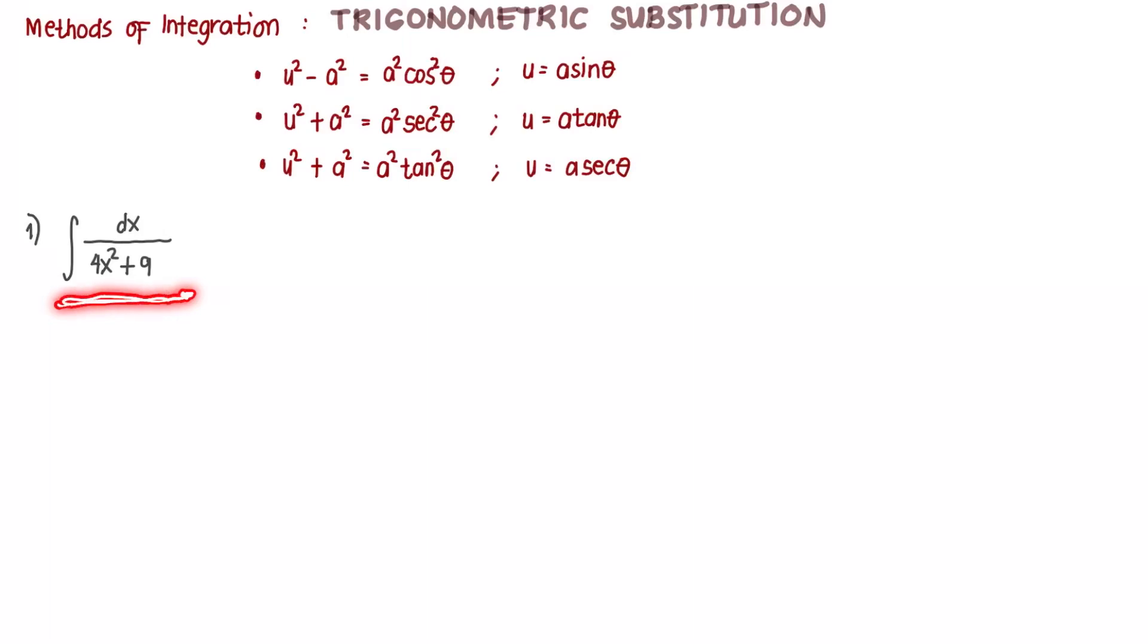But if we cannot recall the formula and we can see that the pattern u squared plus a squared can be seen in the denominator, then we can use the method of trigonometric substitution. So the given can be rewritten as dx over 2x quantity squared plus 3 squared. So we can see that u is 2x and a is 3.